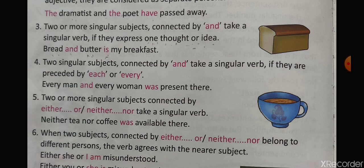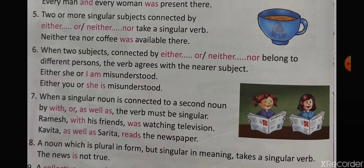Two or more singular subjects connected by 'either...or' or 'neither...nor' take a singular verb. For example, 'Neither tea nor coffee was available there.' When two subjects connected by either/or or neither/nor belong to different persons, the verb agrees with the nearer subject. Like, 'Either she or I am misunderstood' and 'Either you or she is misunderstood.' The verb will always be singular and will act according to the nearer subject.